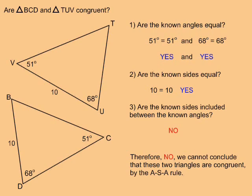In this example, are triangle BCD and triangle TUV congruent? Question 1: are the known angles equal? Both triangles have a 51 degree angle and both triangles have a 68 degree angle, so yes, the known angles are equal. Question 2: are the known sides equal? Both triangles have a side that is 10 units long, so yes, the known sides are equal. Question 3: are the known sides included between the known angles? No. In the upper triangle, the 10 unit side is included between the 51 degree and 68 degree angles. But in the lower triangle, the 10 unit side is not included between the 68 degree and 51 degree angles. Therefore, we cannot conclude that these two triangles are congruent by the ASA rule.